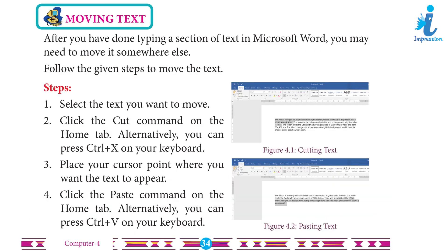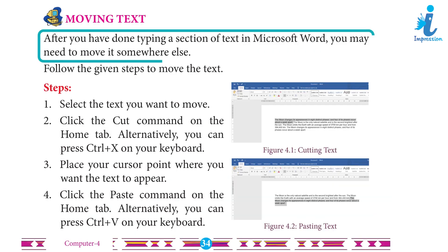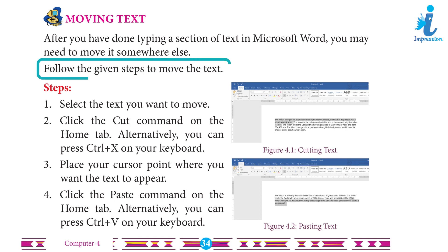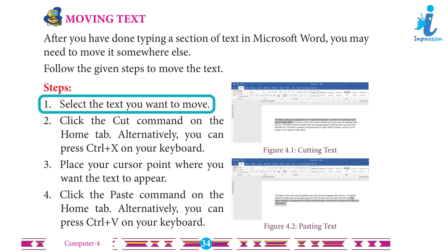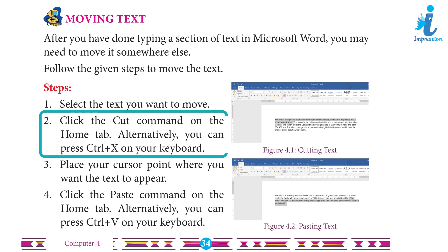Moving Text: After you have done typing a section of text in MS Word, you may need to move it somewhere else. Follow the given steps to move the text. Step 1: Select the text you want to move. Step 2: Click the Cut command on the Home tab. Alternatively, you can press Ctrl+X on your keyboard.